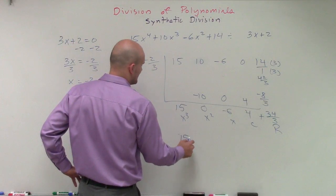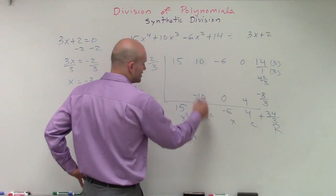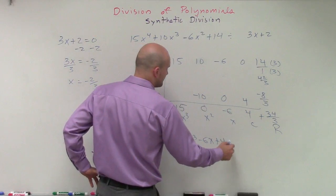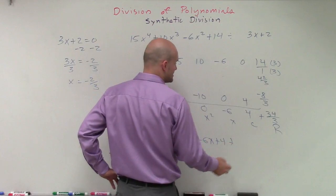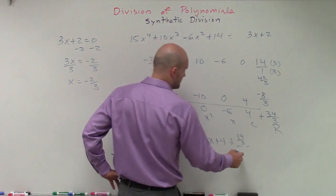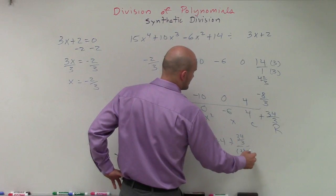So our quotient is 15x cubed. We don't need to write the plus 0x squared minus 6x plus 4 plus our remainder of 34 over 3 divided by 3x plus 2.